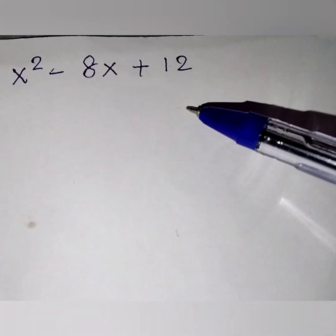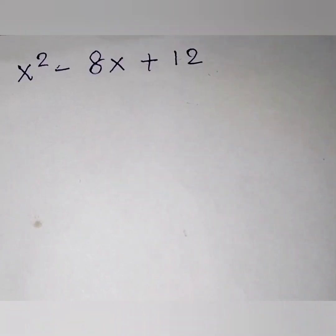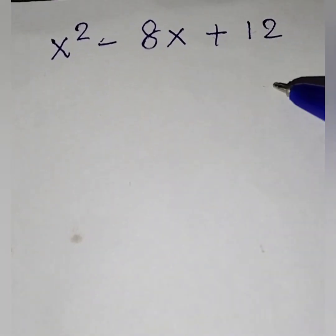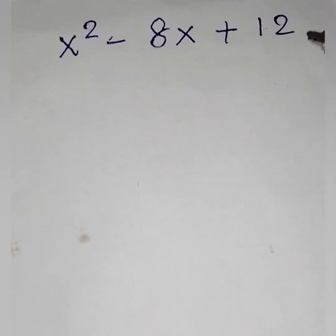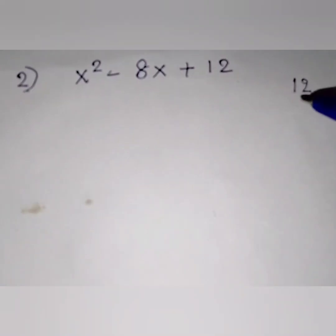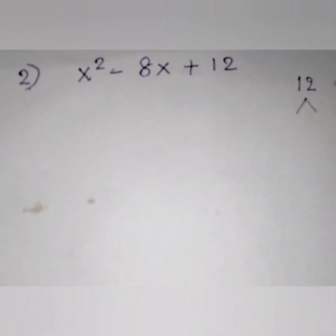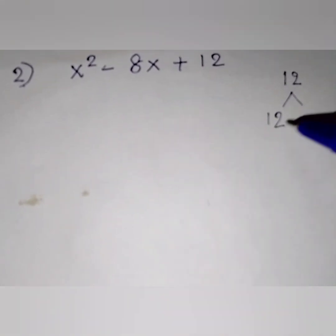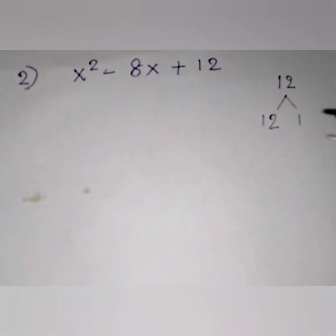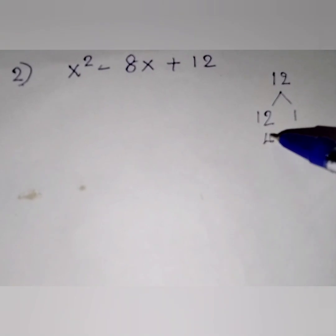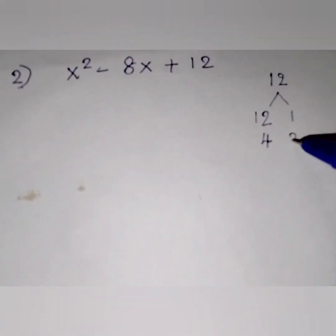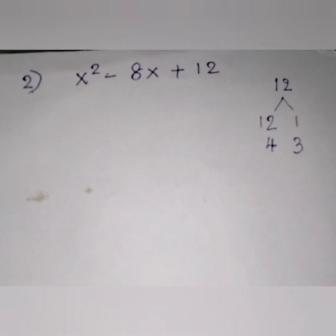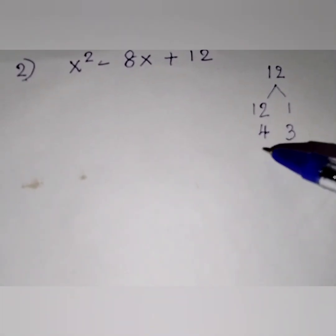Now look at the next question. It is x squared minus 8x plus 12. Now take 12 and find its factors. What are its factors? 12 ones are 12. Then 4 threes are 12. Then 6 twos are 12.